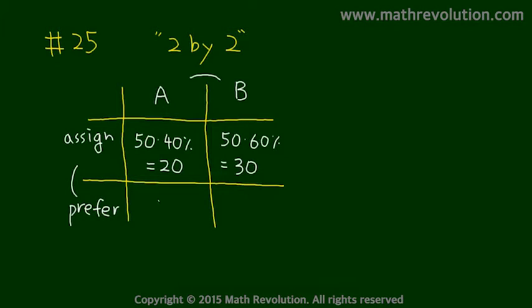But let's look at the preference. 70% of people wanted to be assigned to team A. So that is 35 people.